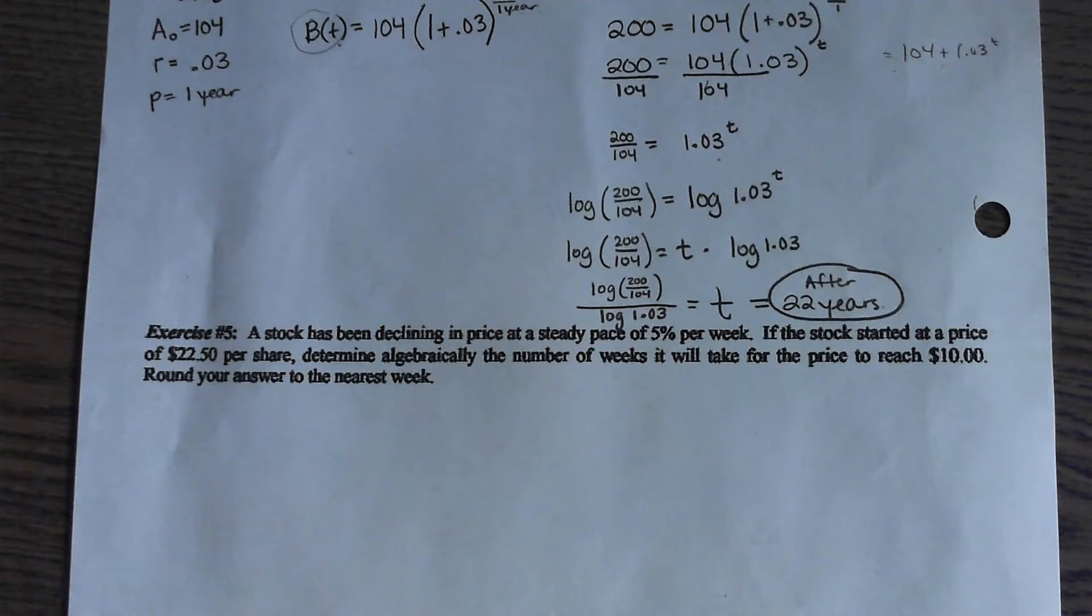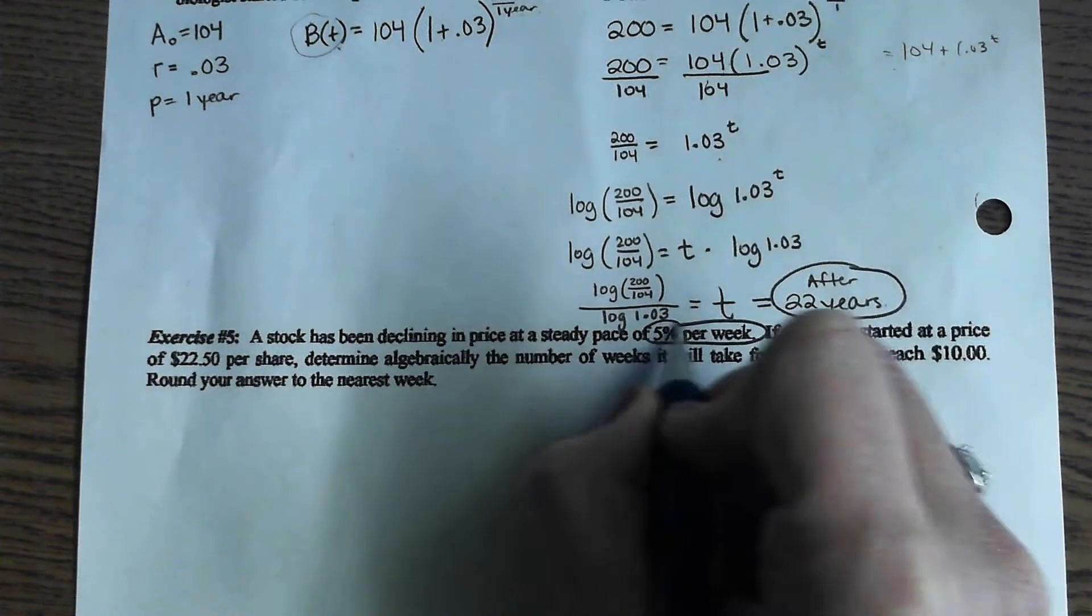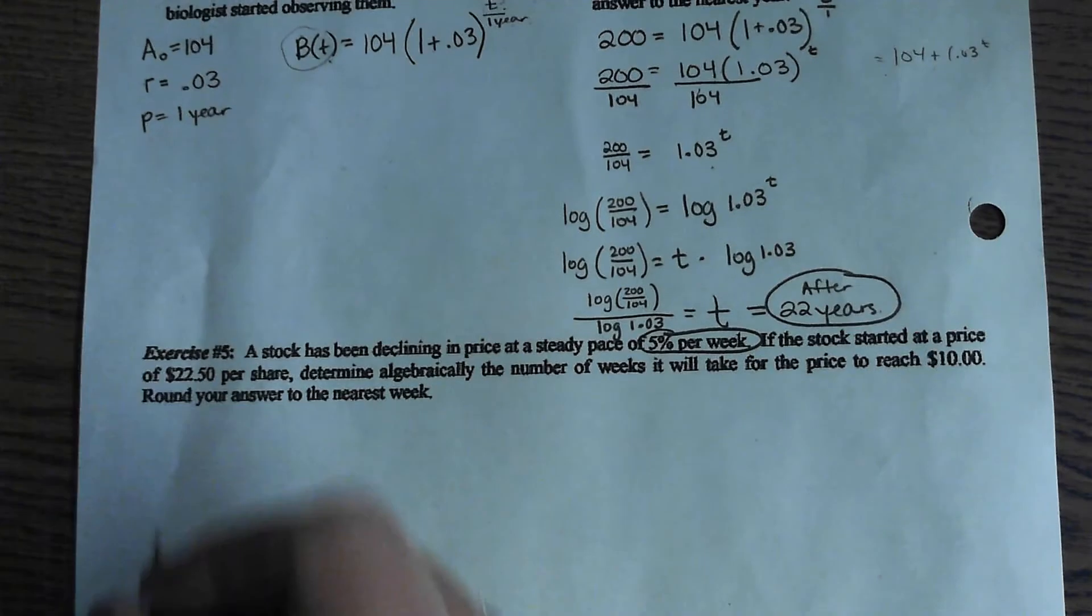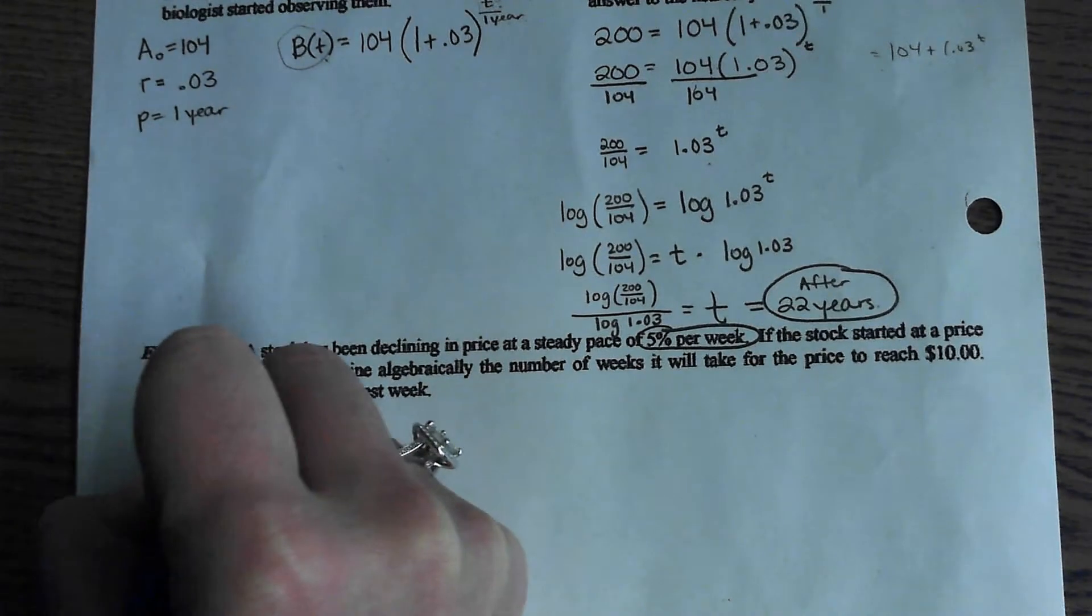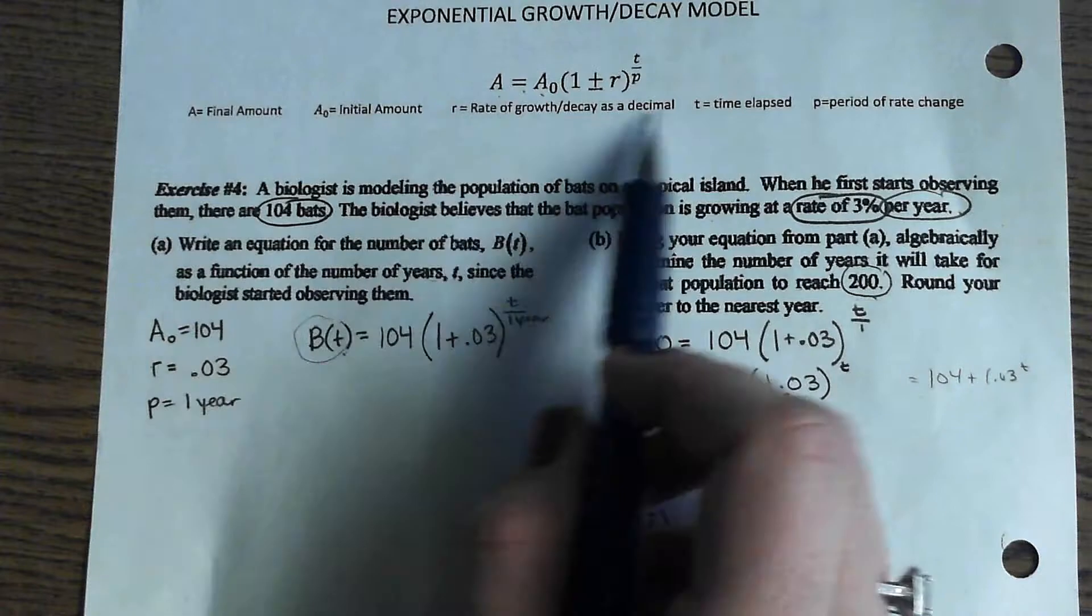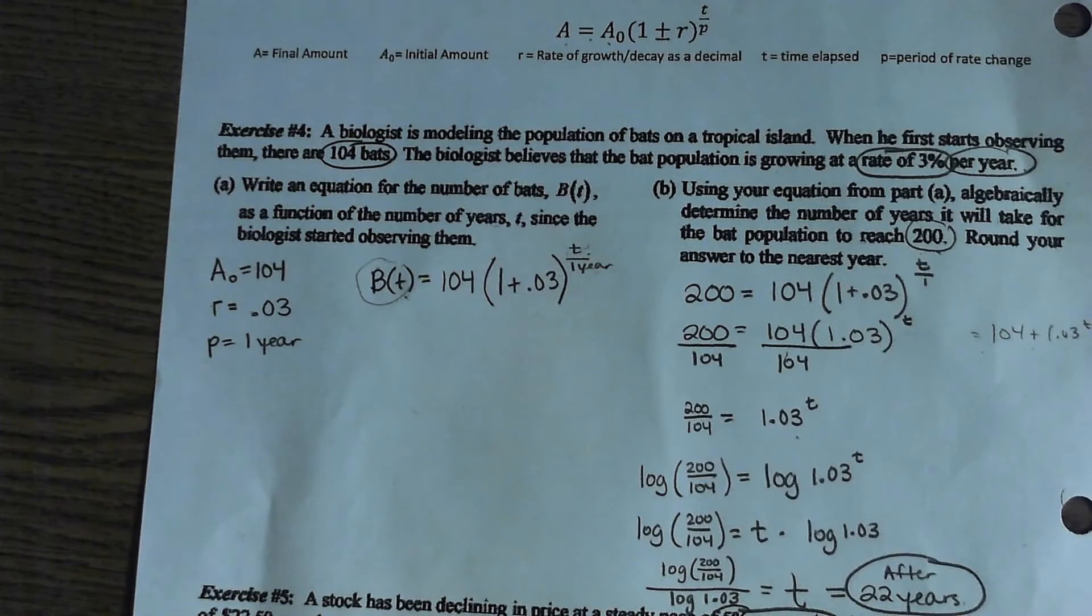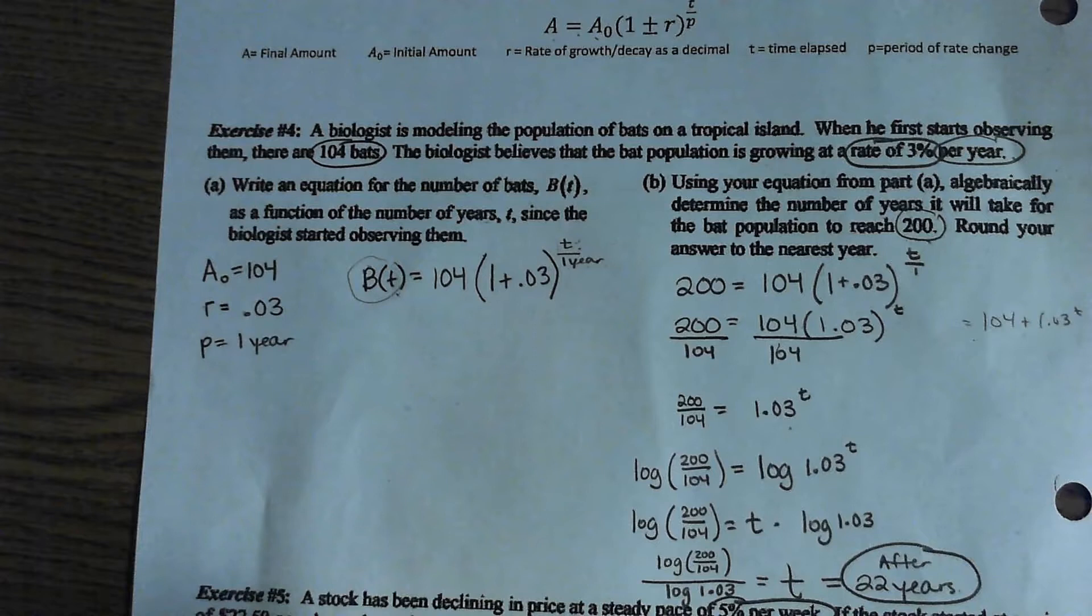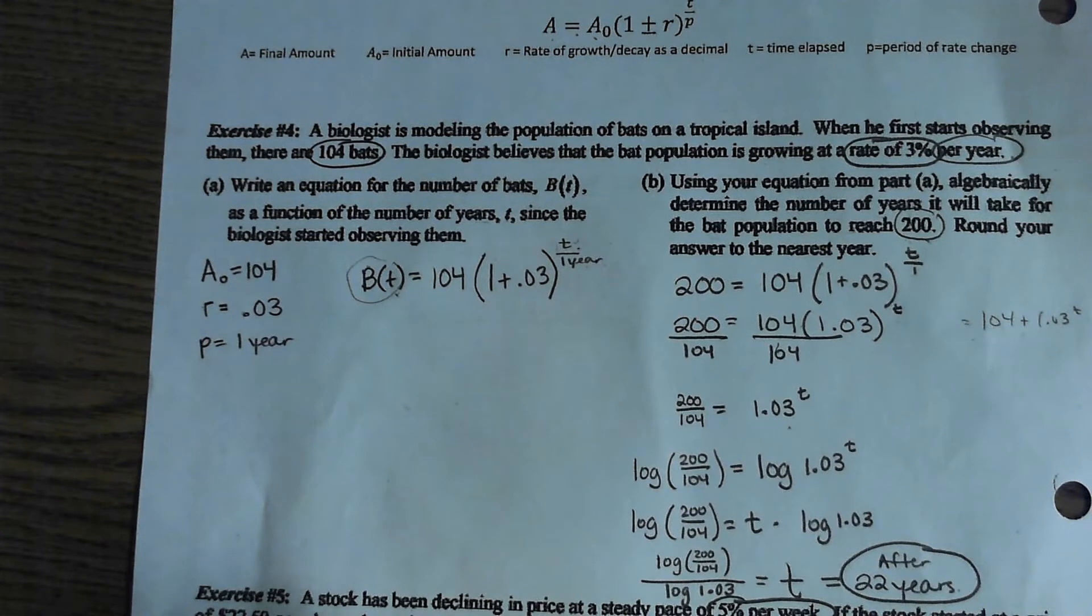Exercise five. A stock has been declining in price at a steady pace of 5%. That gives us the rate of .05. If the stock started at a price of 22.50, oh, Tess, where's the 22.50? Which variable is that? A sub zero. Very good. A sub zero is 22.50.